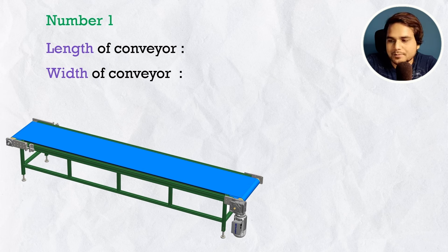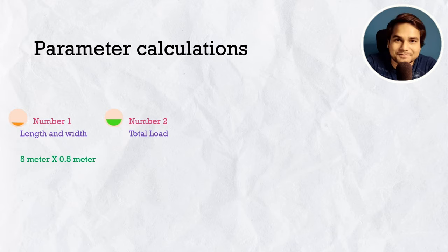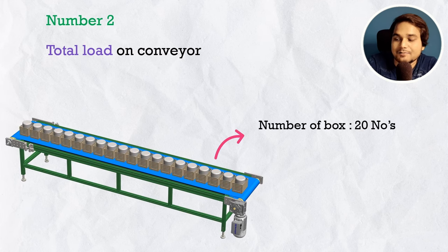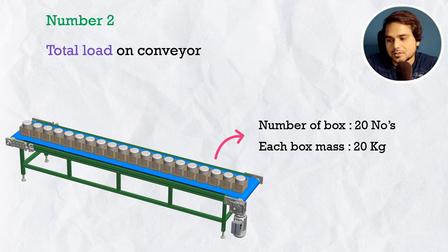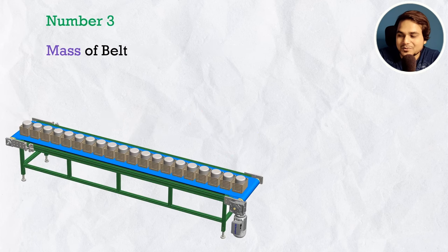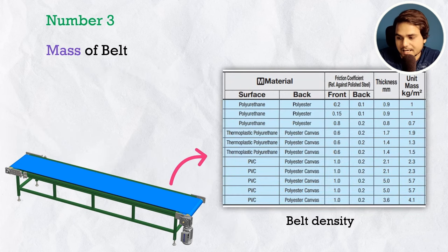To calculate the required motor power, we need several parameters. Number one: total length and width of the belt conveyor — for example, length 5 meters, width 500 mm. Number two: load over the conveyor belt — for example, 20 boxes each 20 kg, so total load mass is 400 kg. Number three: total mass of the belt, calculated using the selected belt material density for the given belt size.